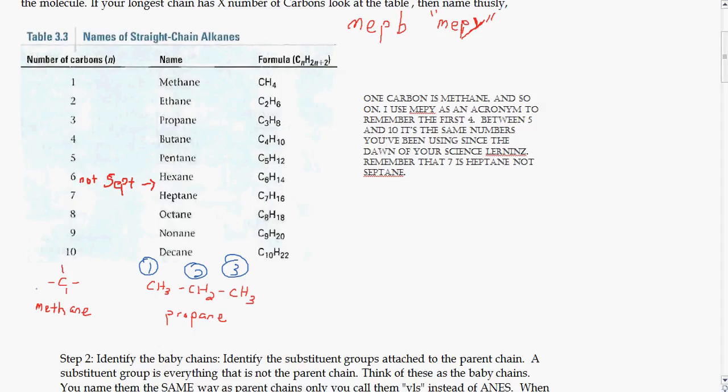So MEPI for methane, ethane, propane, butane. MEPB, MEPB kind of works. So here I put two examples: here's methane and here's propane. Methane only has one carbon hanging out, and here on propane you have three. One, two, three, MEP, propane.